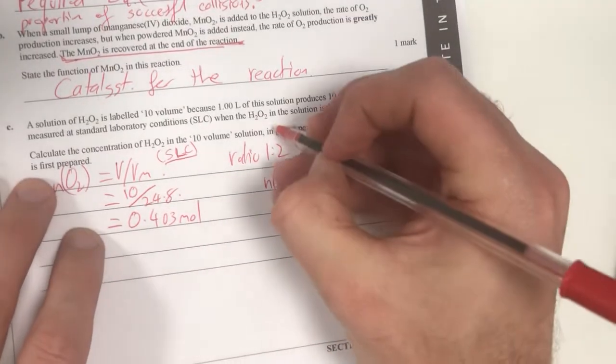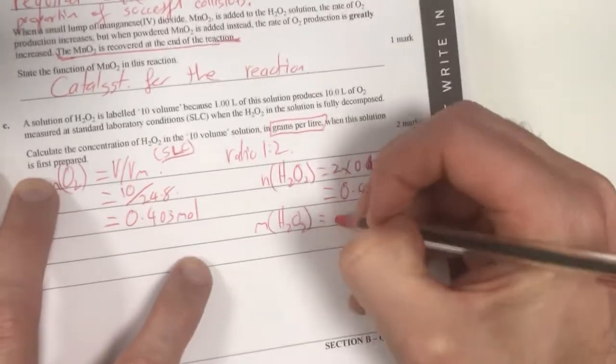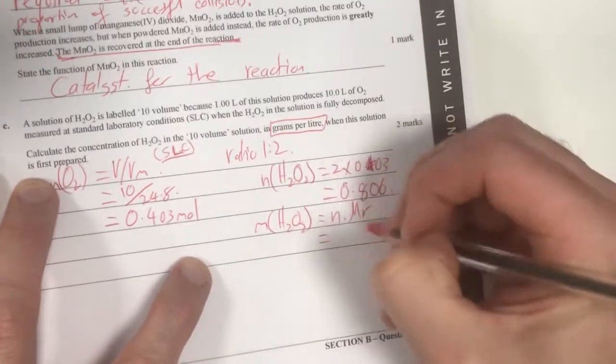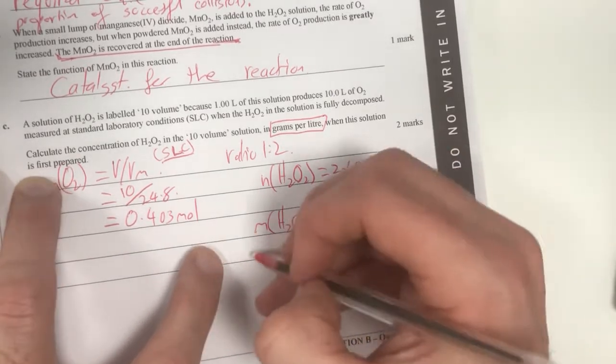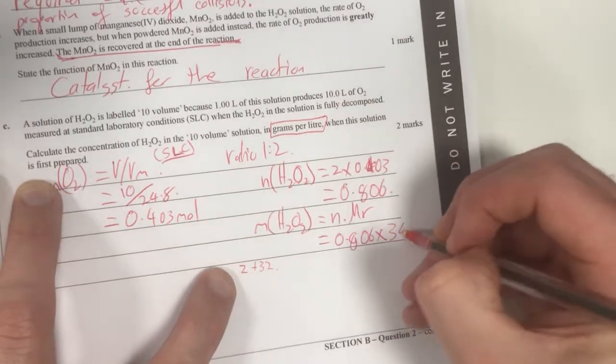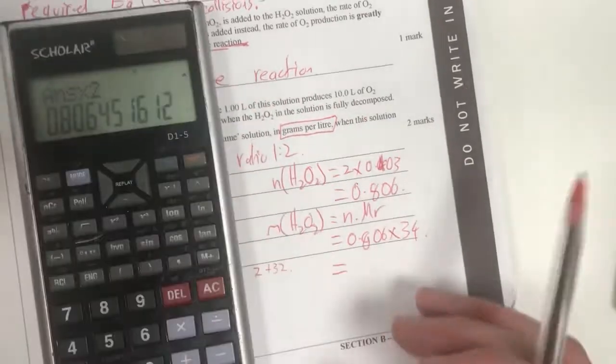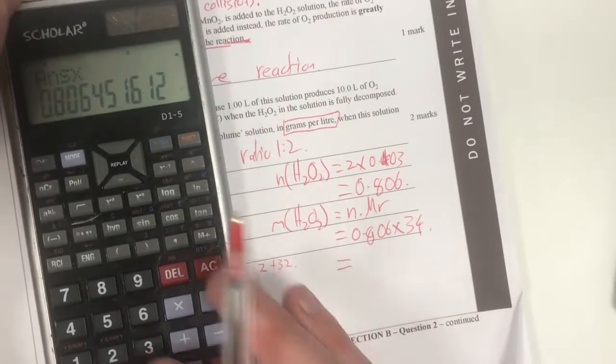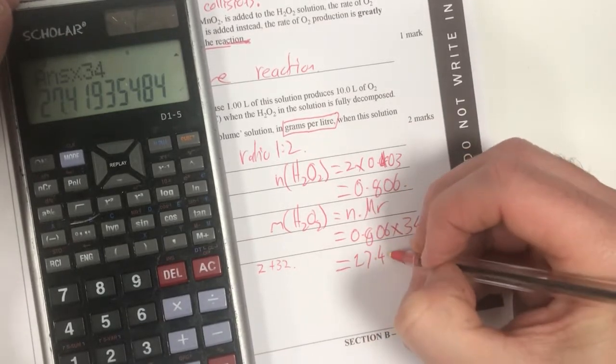Therefore my number of moles of H₂O₂ is going to be 2 times 0.403, times that by 2, and I'm going to get 0.806. Now that's coming from 1 litre of this, so I need to get my solution in grams per litre. I need to get my mass of H₂O₂ equals number of moles times molar mass. 0.806 times by my molar mass of this - it is H₂O₂, so it is 2 plus 32 is 34. 2 coming from 2 hydrogens, 32 from 2 oxygens.